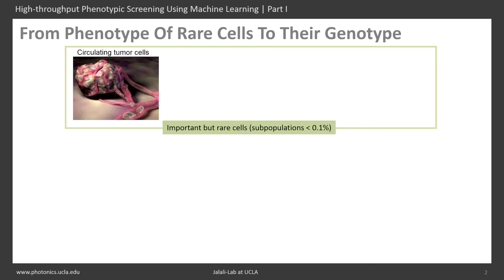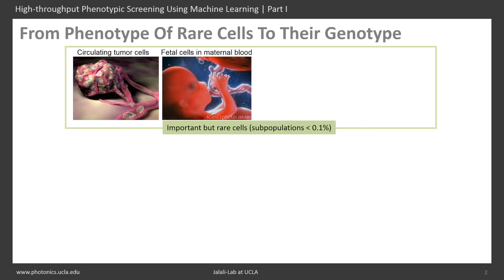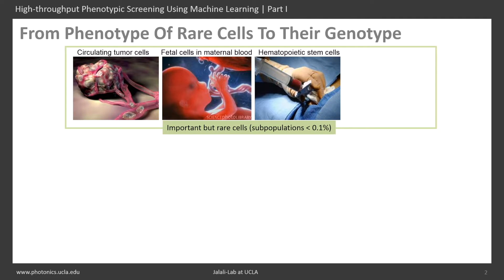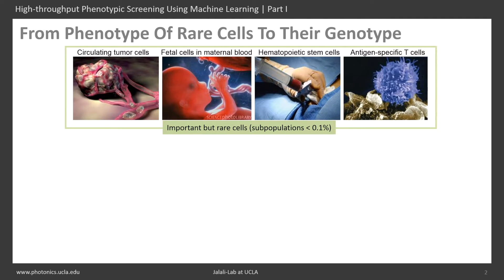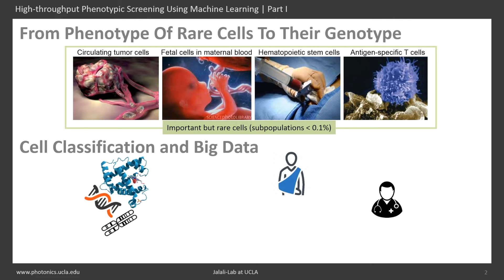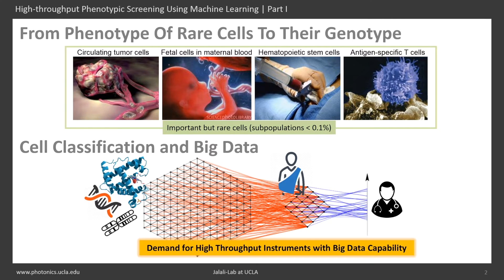There are other similar applications, such as detection of fetal cells, stem cells, and T cells. Rare cell detection in blood and liquid biopsy opens up new paths to data-driven phenotypic diagnosis and a better understanding of heterogeneous gene expression in cells.